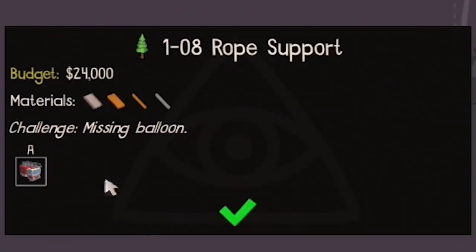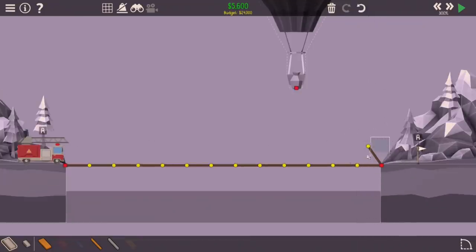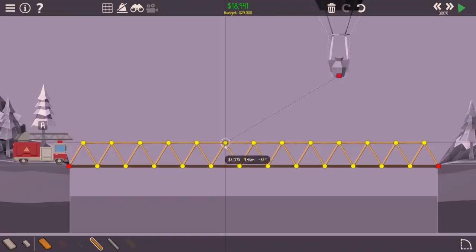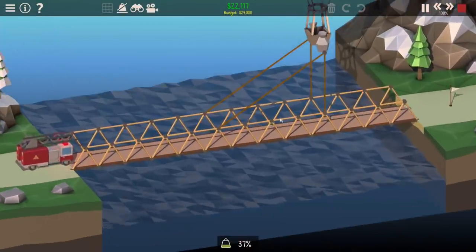Rope support, fire truck going across, we're missing the balloon. I remember this one from before. Pretty sure I can make this one work without too much issue because we can use big triangles to hopefully grab kind of the center of the bridge. And let's just see what this does before I get carried away down to 100% speed.